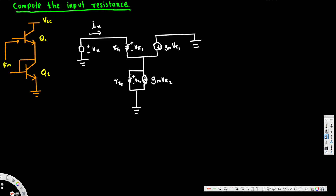Now let's go ahead and find out the input resistance. To find the input resistance, first we have to know what is the emitter current. The emitter current is going to be the addition of these two currents, so ie is going to be gm2·v52 plus v52 over r52.